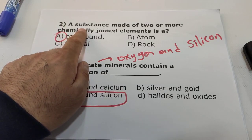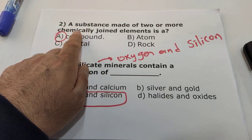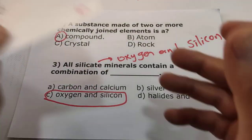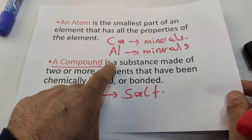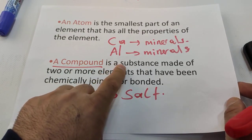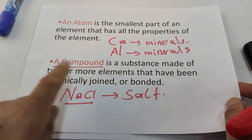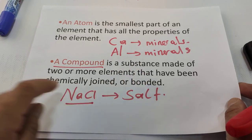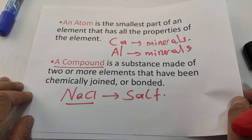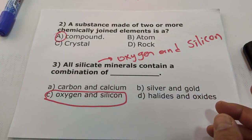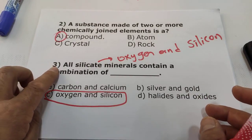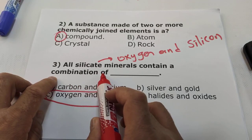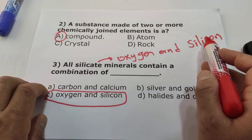Question two: a substance made up of two or more chemically joined elements is a compound. The definition: a compound is a substance made up of two or more elements that have been chemically joined or bonded. So our answer will be A.